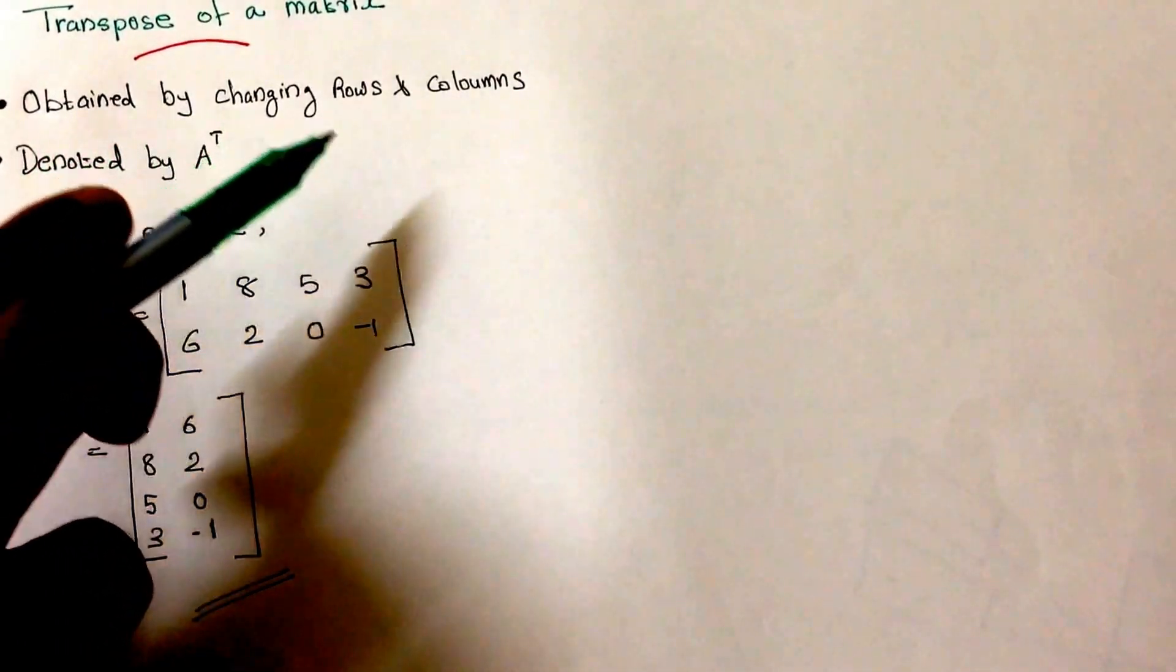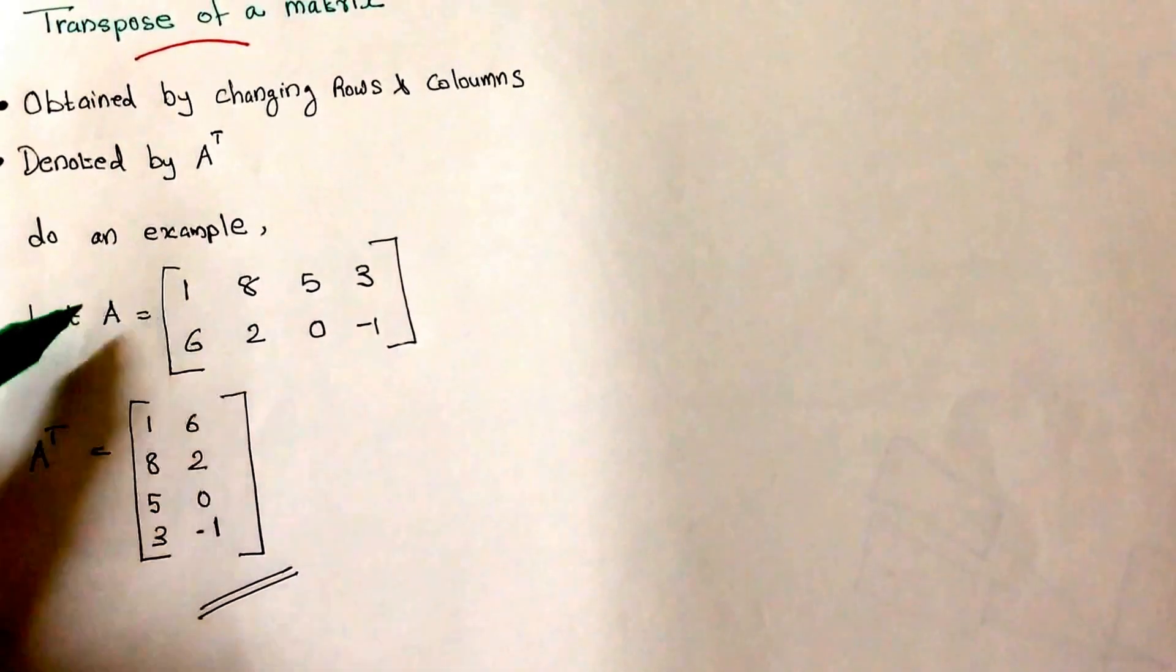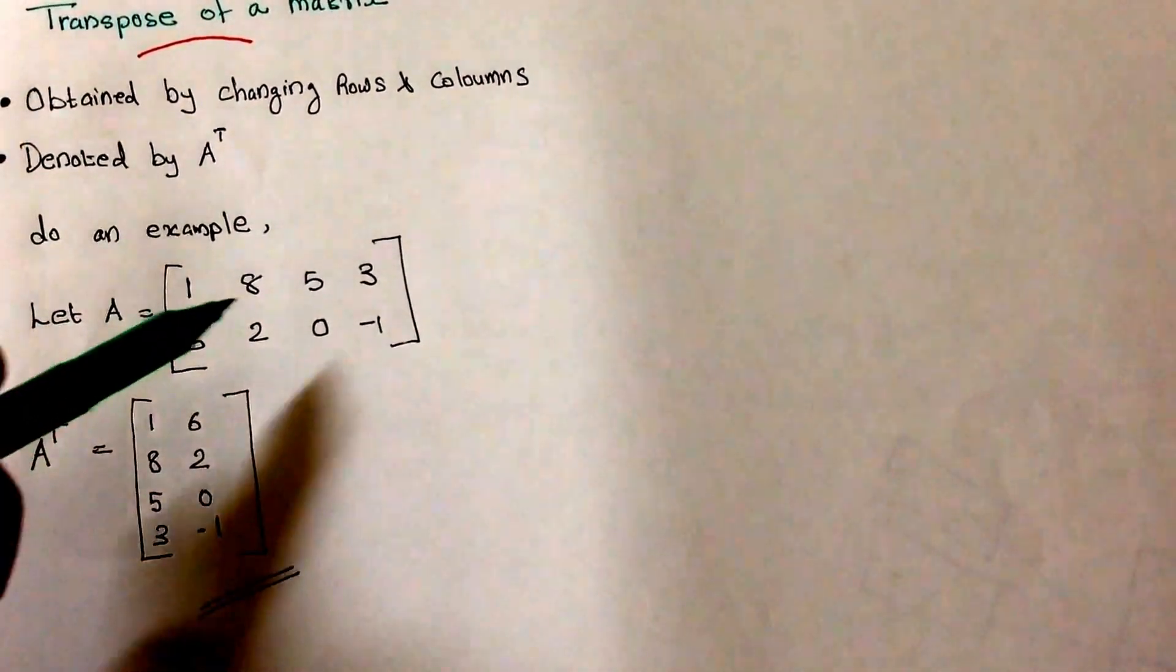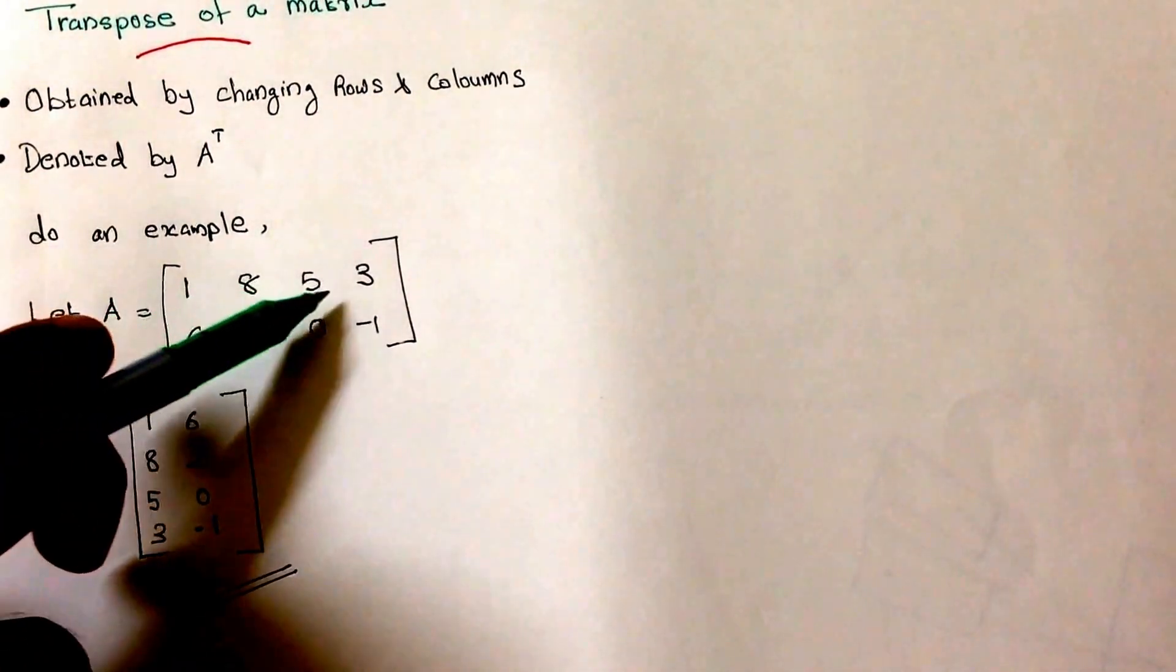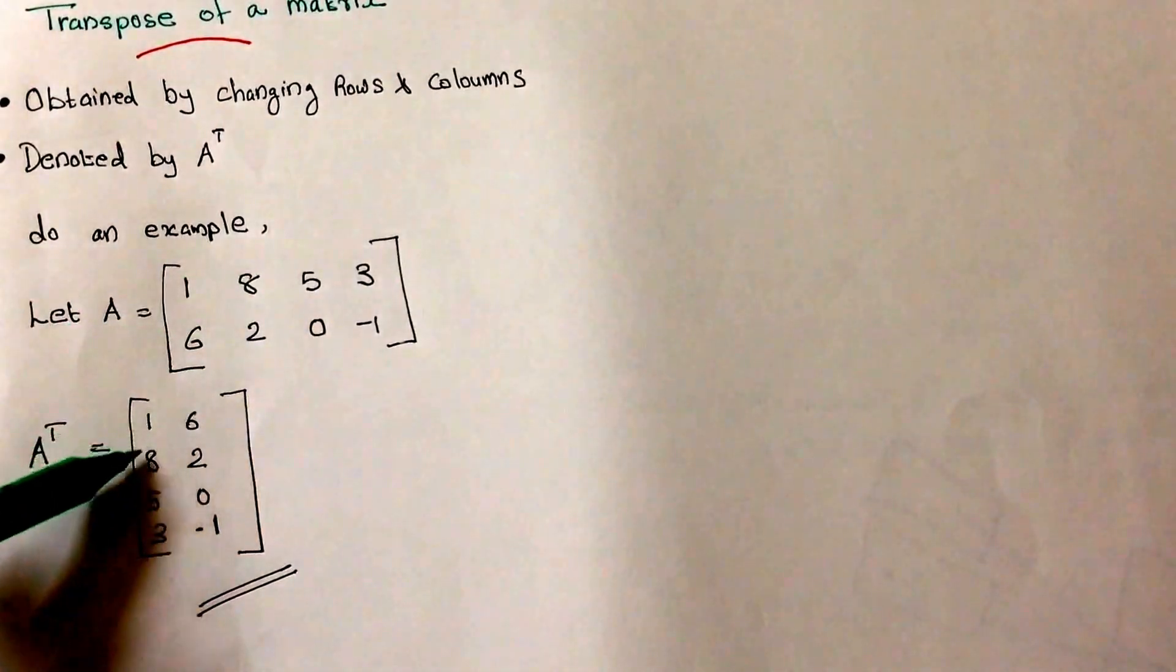What we have to do? We have to change the rows and columns. For the transpose, A transpose is equal to - this row 1, 8, 5, 3 will become the column: 1, 8, 5, 3.